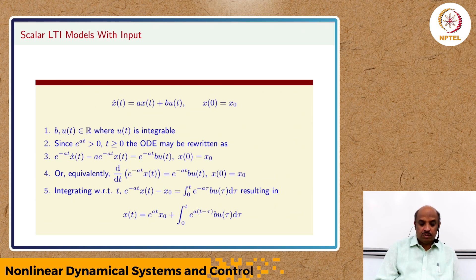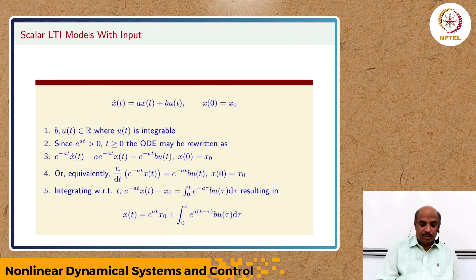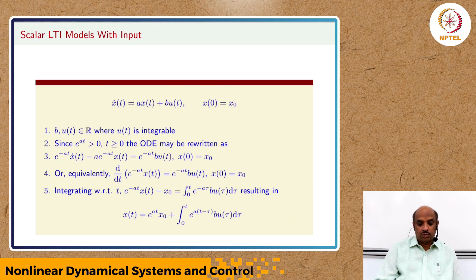If the initial condition is 0, only the external input is effective, and vice versa. This is the summary of scalar linear time-invariant models with and without input. We can study this function by simple analysis. If a is a negative number, the effect of x(0) dies down as t → ∞, since e^(at) → 0. The second term depends on the behavior of u(t).